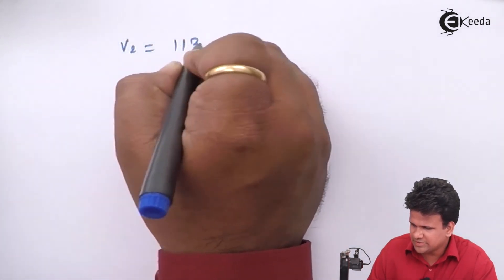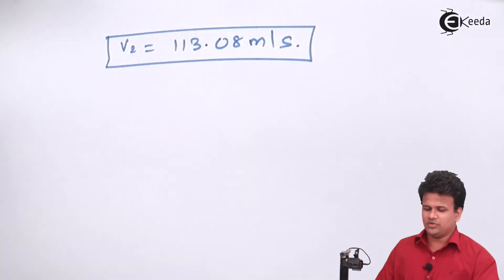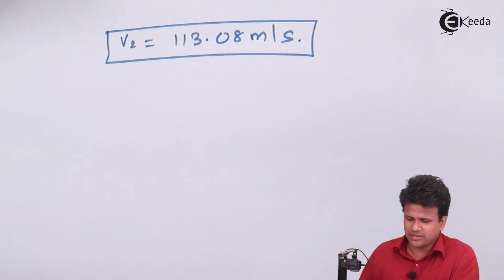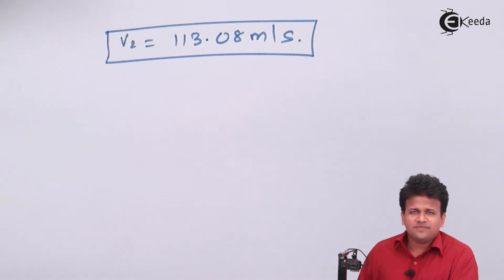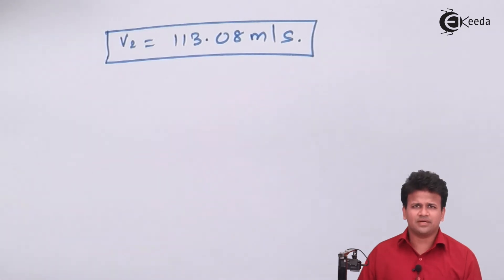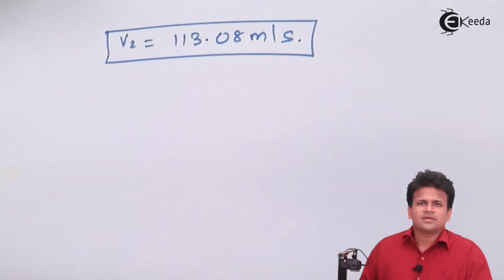On calculation, we get V2 = 113.08 meters per second. Note that you must take the square root on both sides to obtain V2. We have applied Bernoulli's equation in the adiabatic process along with the adiabatic relation P1/ρ1^γ = R·T1. By combining these equations, we can solve real-life problems on Bernoulli's equation and continuity equation in compressible fluid flow. Thank you.